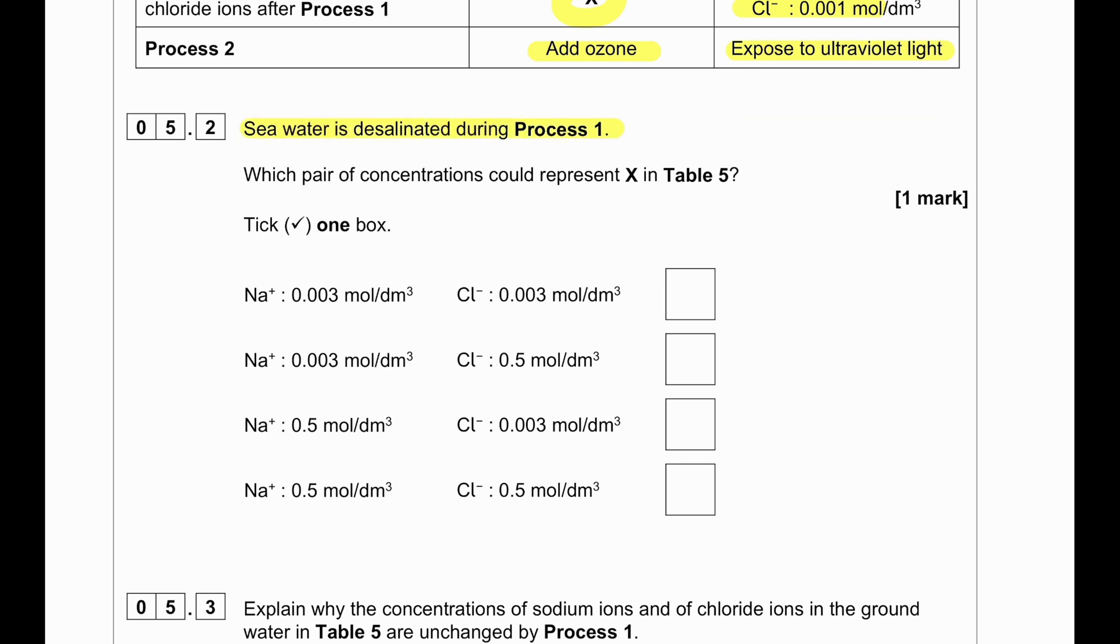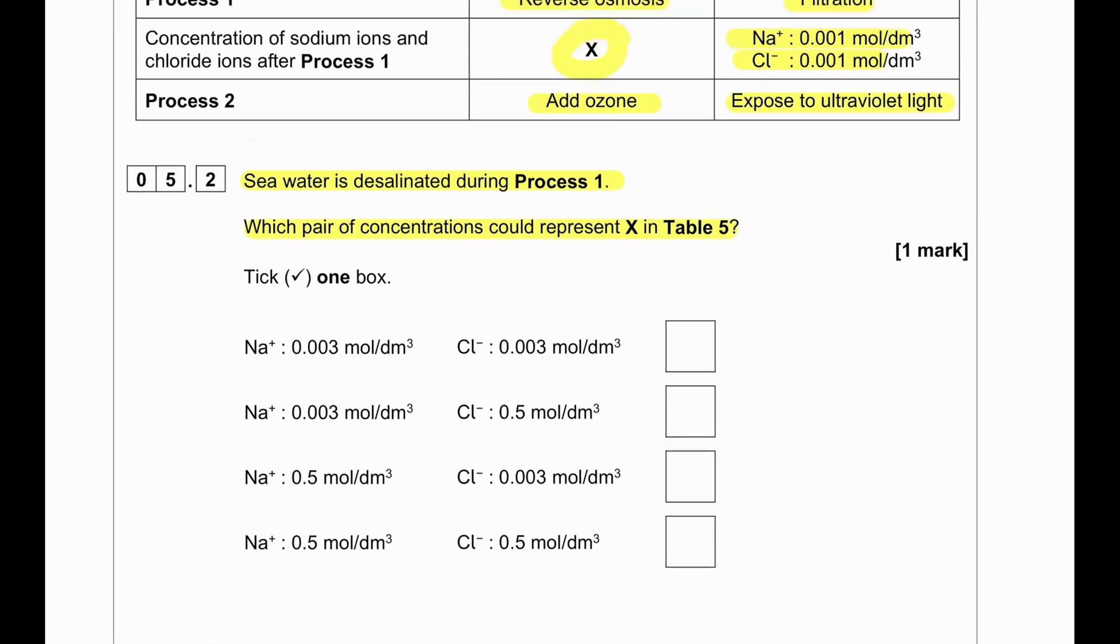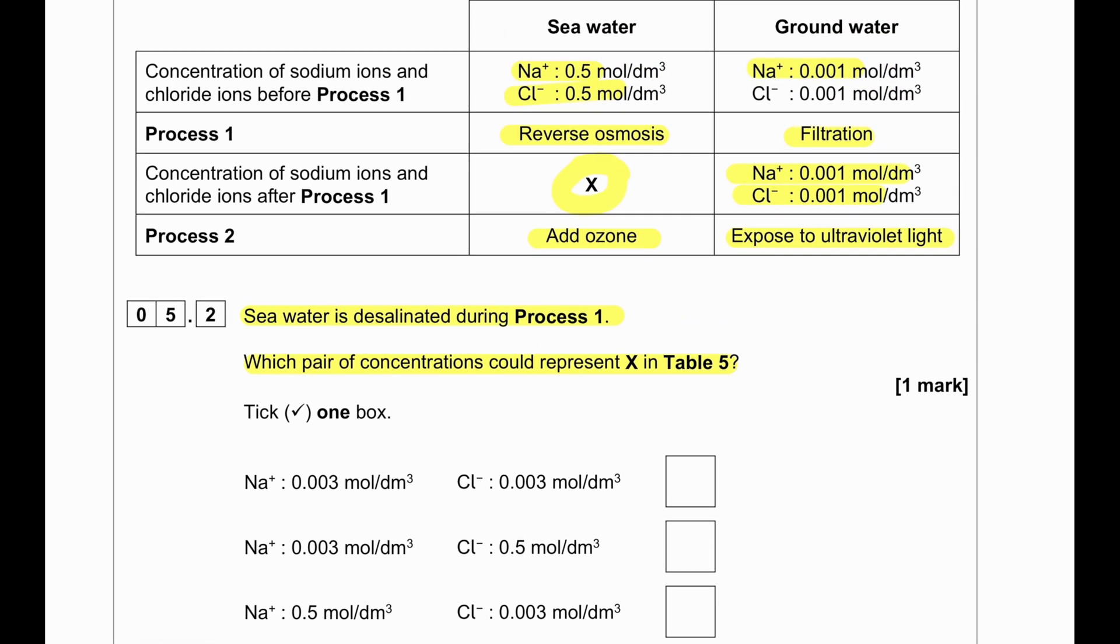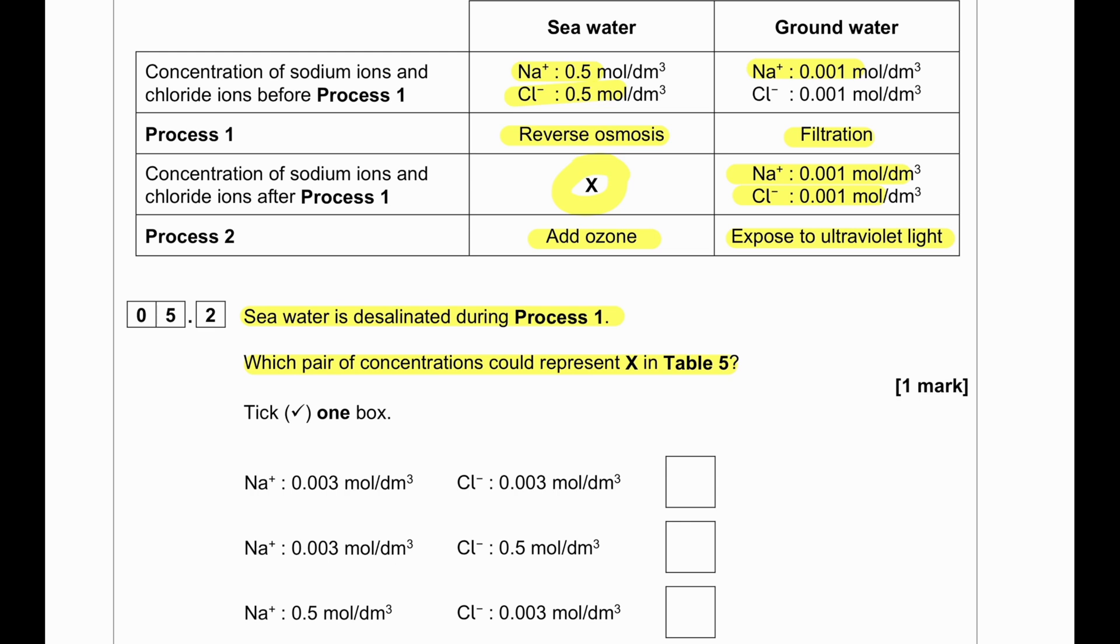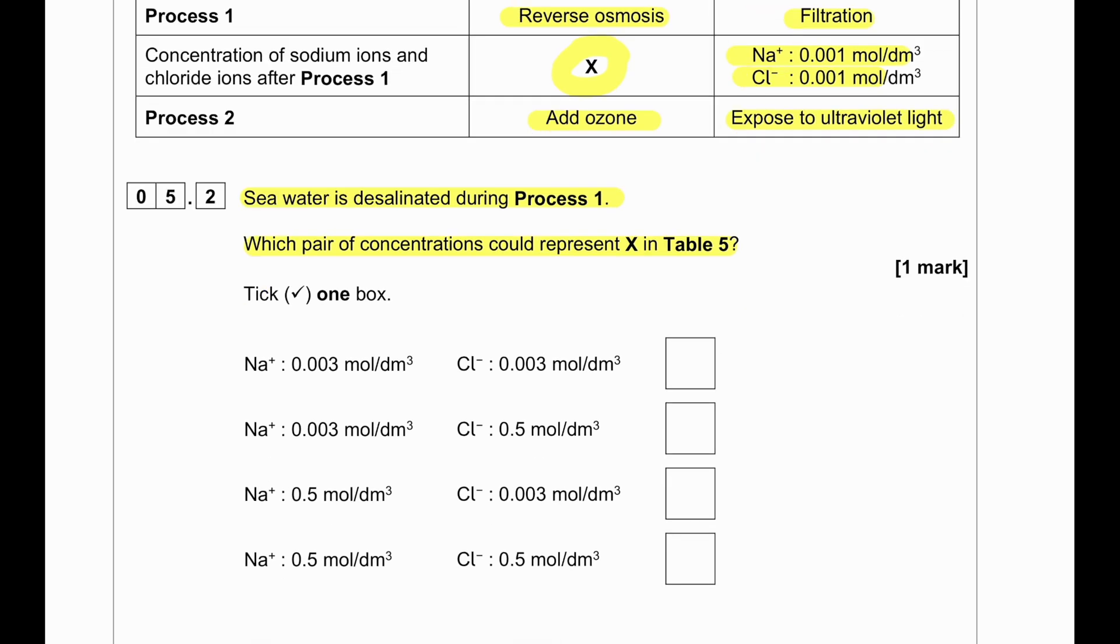Seawater is desalinated during process 1. Which pair of concentration would represent x in Table 5? Obviously, since it is desalinated, it's going to have the least amount concentration of sodium and chloride ions. So we can consider sodium and chloride to be negligible. This one would be the answer.